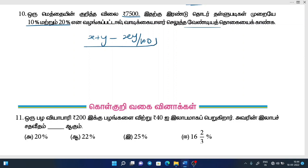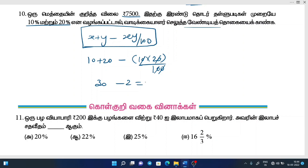Formula — answer easy. x and y: x equals 10, y equals 20. Divided by 100 — cancel — gives 2. So 10 minus 2 equals 8, giving us 28. 28 percent — 28 percentage. Multiply — that is the discount.